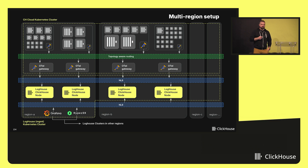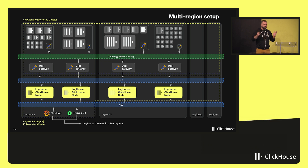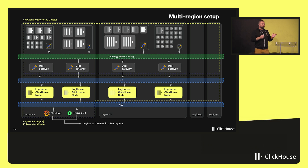We run it in multiple regions, so it's a little more complicated than that. Each region — one of the key decisions we made — is that we collect telemetry for each region separately. It never leaves the region. That's done for both performance and cost efficiency purposes. And when we need to query across regions, we rely on ClickHouse to execute distributed queries across the regions.